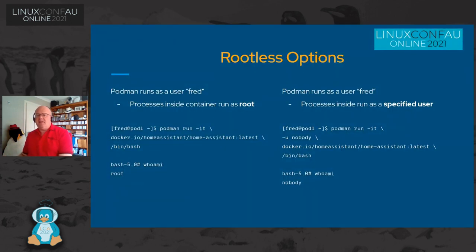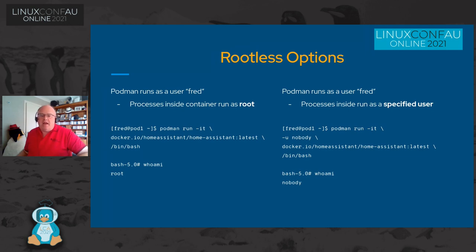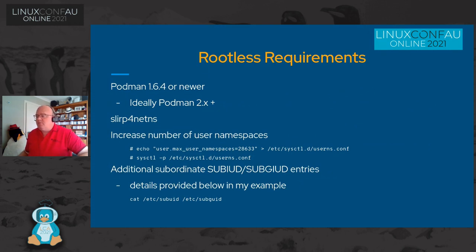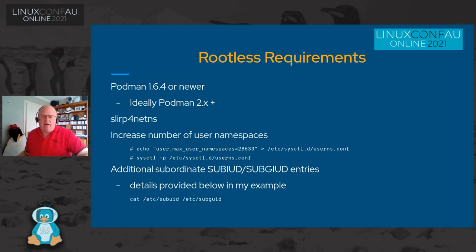What's happened is the container ecosystem has almost got lazy — most of the time containers internally are running as root, or the services run as root. I think that's a problem we're going to have to resolve in the long term. So what do you need to run rootless? First you need Podman. Podman makes it very simple and easy. Version 1.6.4 is kind of the minimum where things really started working; ideally you want to run a Podman 2.x release. Then you need the slirp4netns package, which helps handle some of the network namespace support. You also need to increase the number of user namespaces so that we can actually create the user IDs needed to run these user space containers.